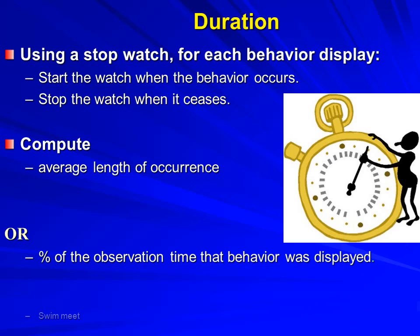With duration recording, we typically use a timer or stopwatch. Whenever we see the defined behavior occur, we start the watch; when it ceases, we stop the watch. At the end of our observation, we can compute the average length of time the behavior occurred, or get the percentage of the observation time that the behavior was occurring.